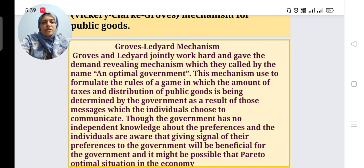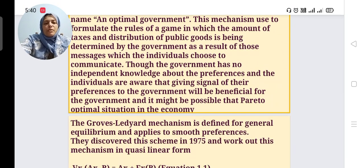Groves and Ledyard jointly worked hard and gave a demand revealing mechanism called an optimal government. This mechanism is used to formulate rules of a game in which the amount of tax and distribution of public goods is being determined by the government as a result of those messages which the individuals choose to communicate.